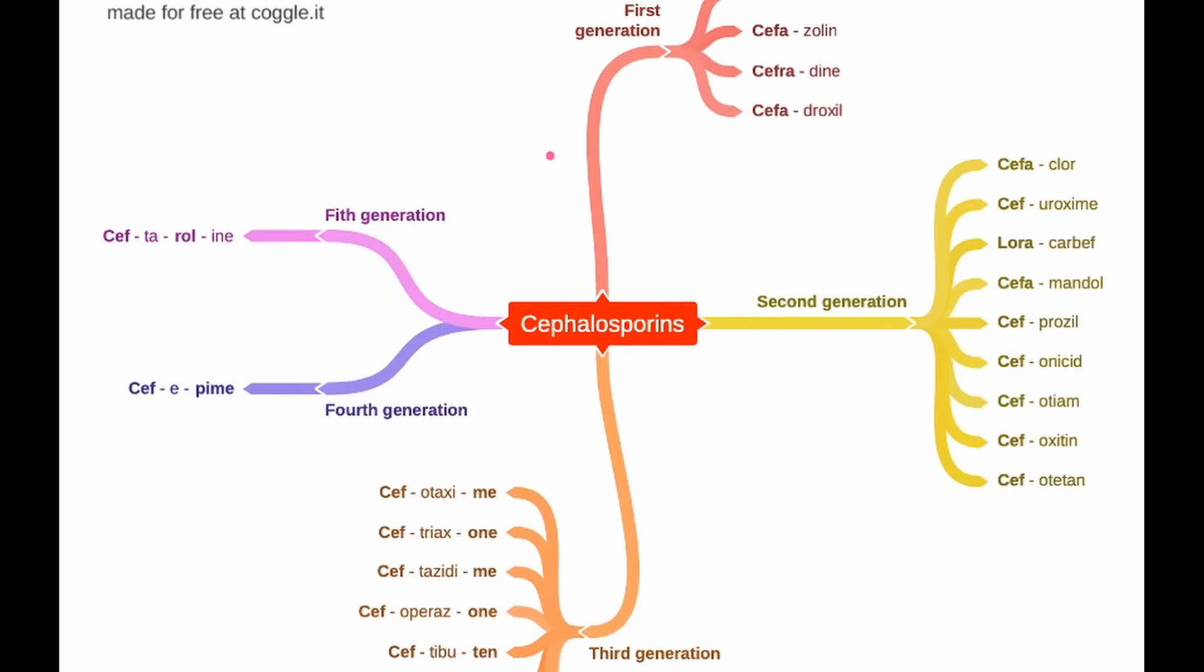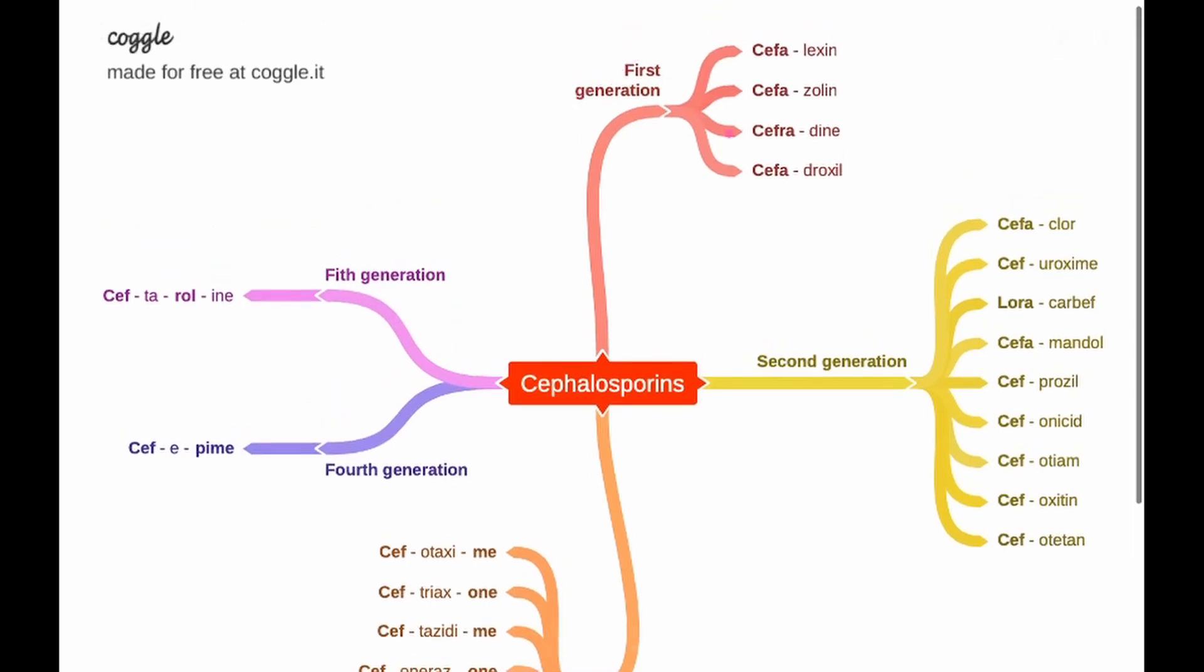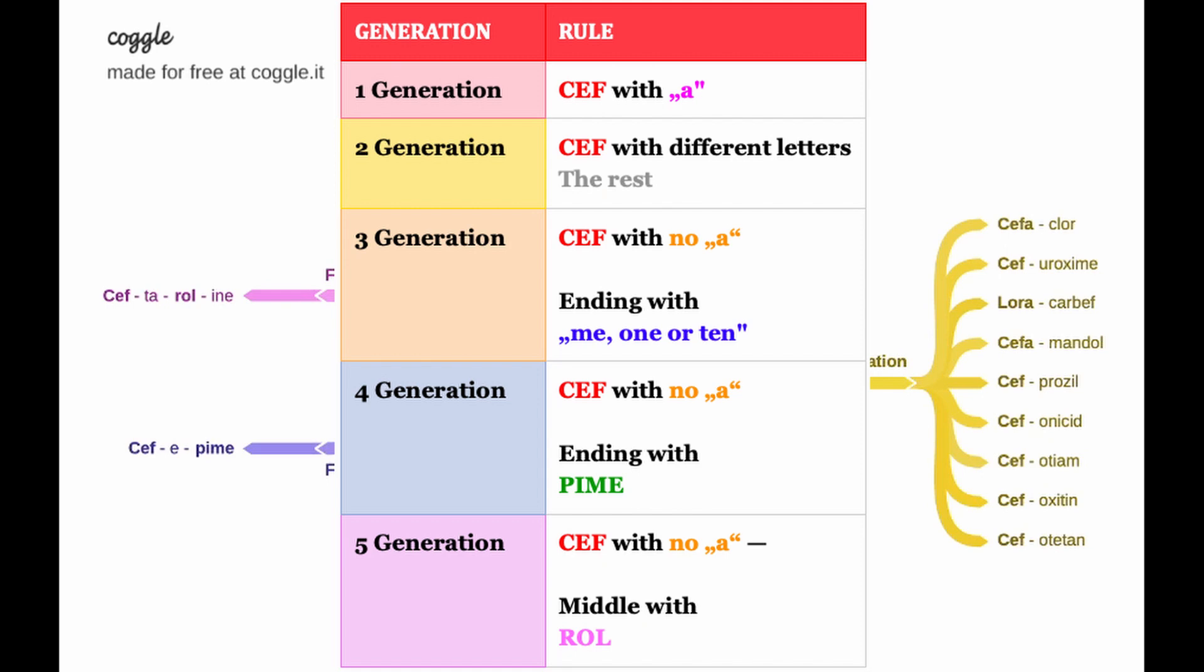The letters in the pharmaceutical names of these generations have similarities inside a certain generation. I gave every generation a rule, a rule where the letters repeat themselves. Here's an overview of the similarities in this table.